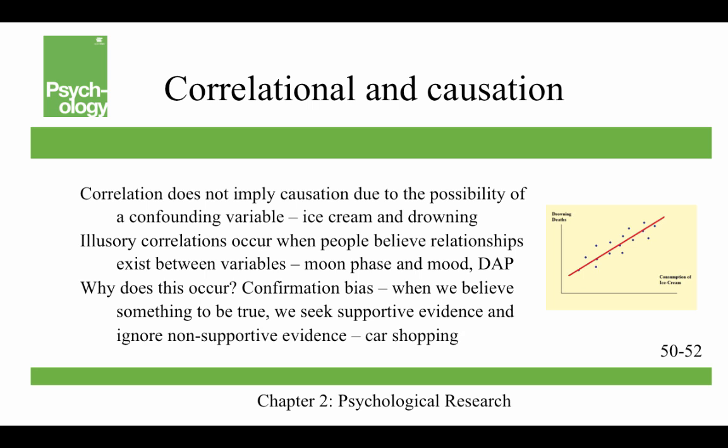Correlation does not imply causation due to the possibility of a confounding variable. For example, there is a positive correlation between ice cream sales and drowning — the more ice cream that's sold, the more people drown. That's not because ice cream causes drowning; it's because both are related to summertime — more people are swimming and more people are eating ice cream. You might also find illusory correlations, which occur when people believe relationships exist between variables. Some people think there's a relationship between moon phase and mood. The DAP — the Draw-A-Person test — is also an illusory correlation. I always remember a Peanuts cartoon where Charlie Brown tells Linus he drew his hands behind his back because he's insecure, and Linus says no, it's because he can't draw hands. That's illusory correlation.